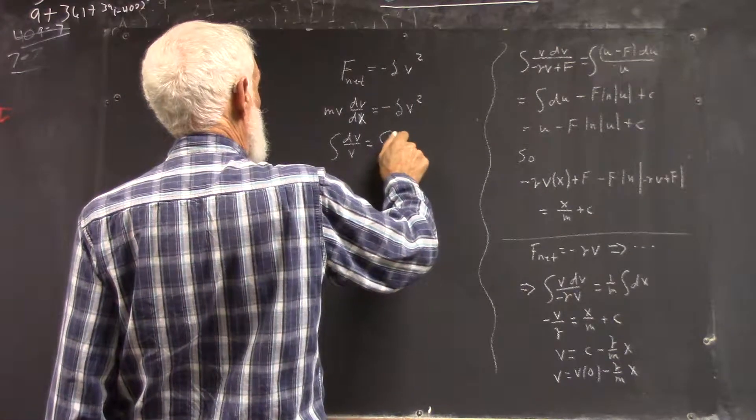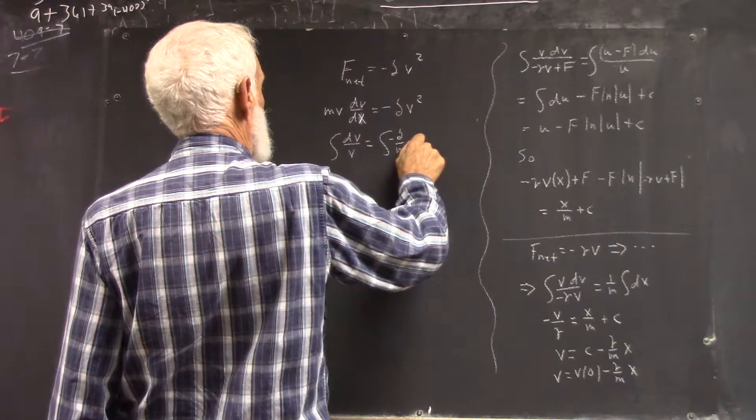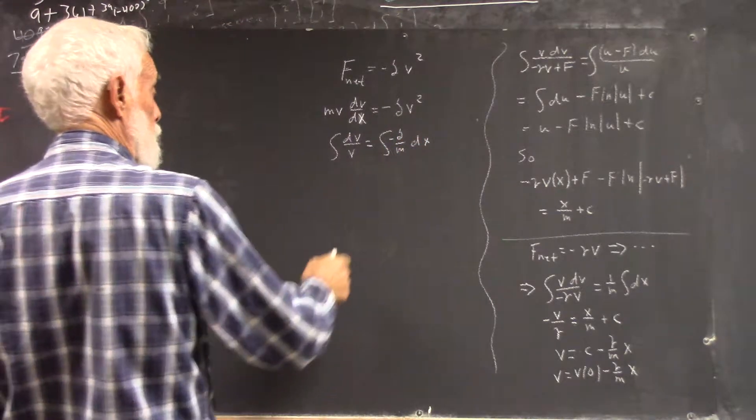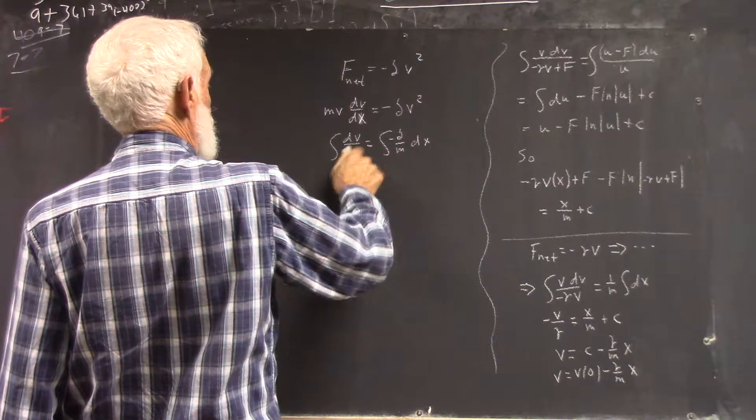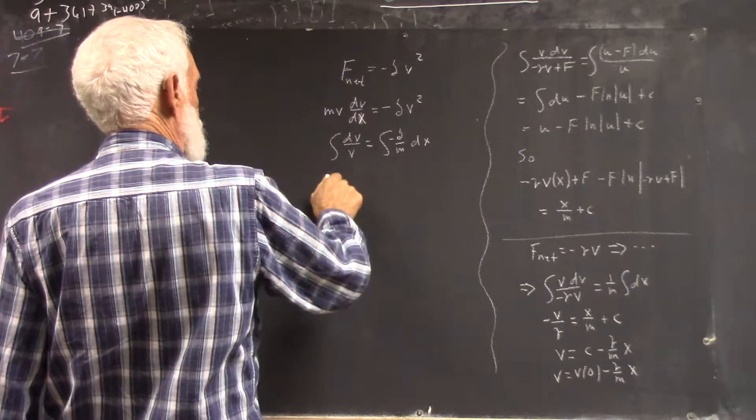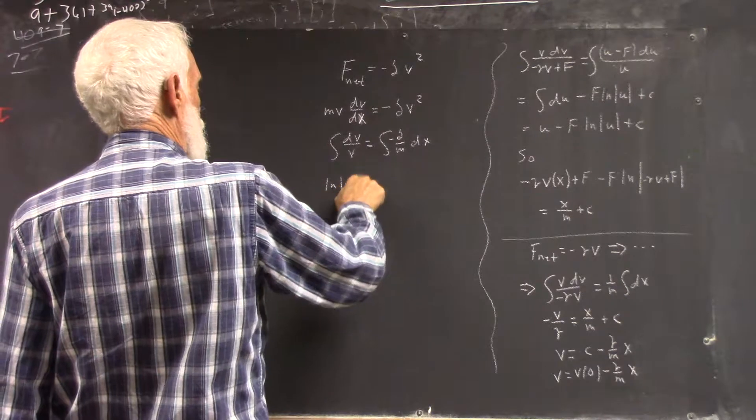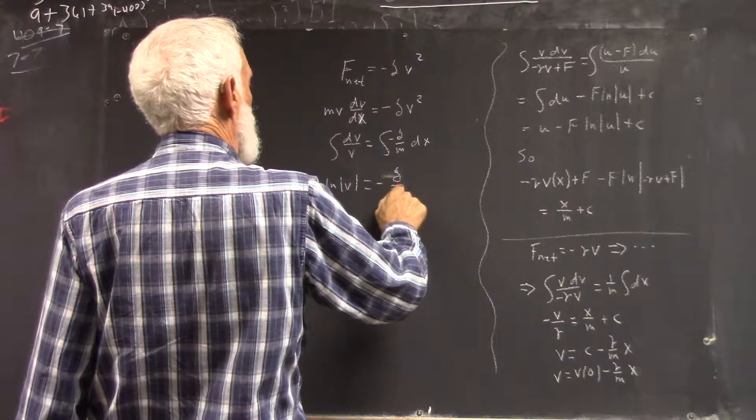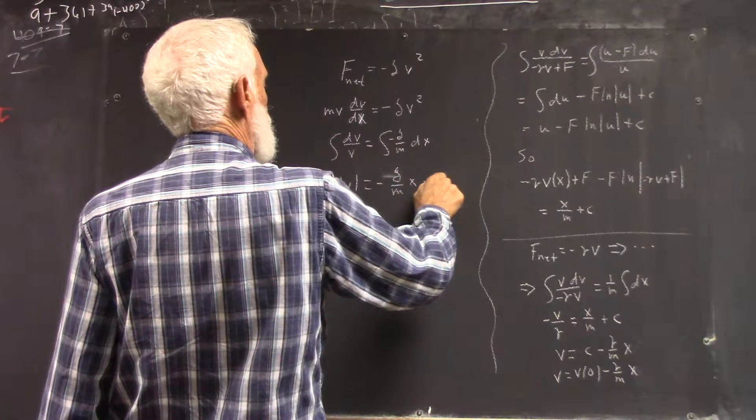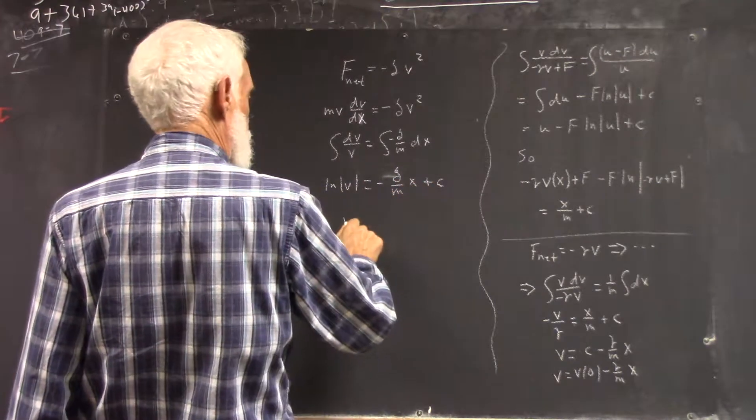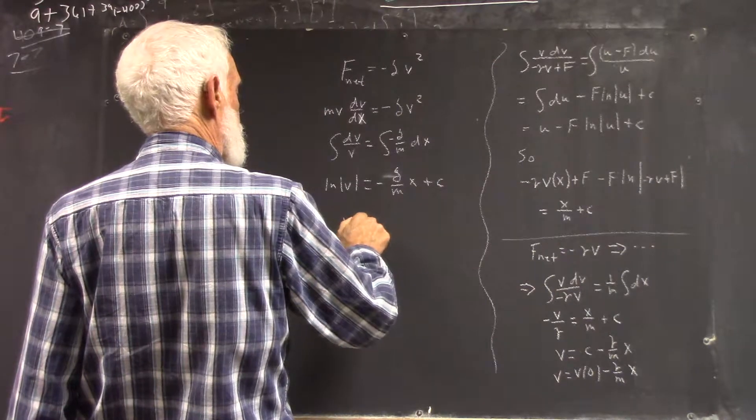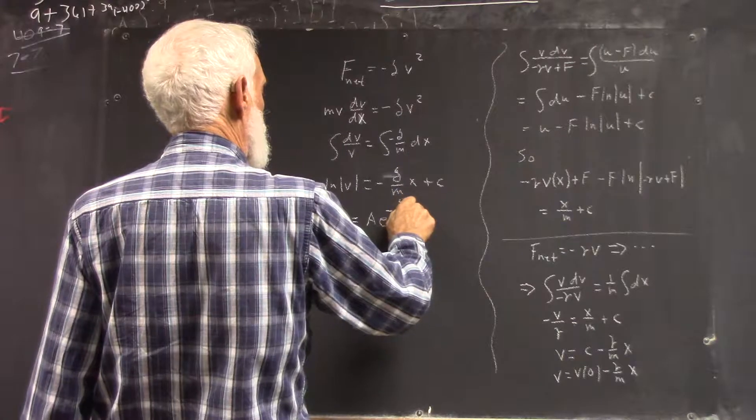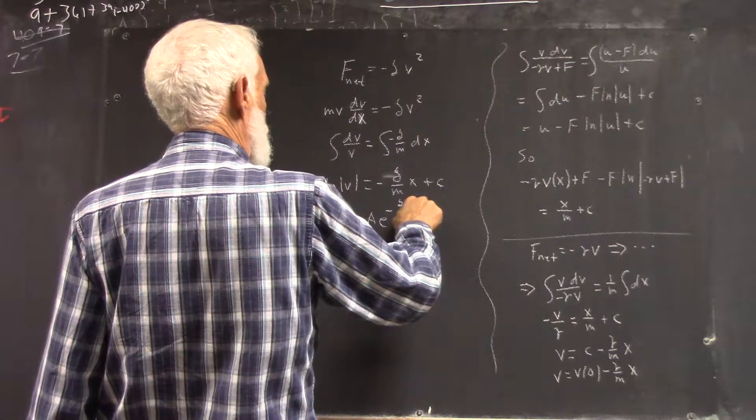We're going to have negative delta over m dx. And divide by the v, so you get the natural log of the absolute value of v equals negative delta over m times x plus an integration constant, so that v equals A e to the negative delta over m times x.